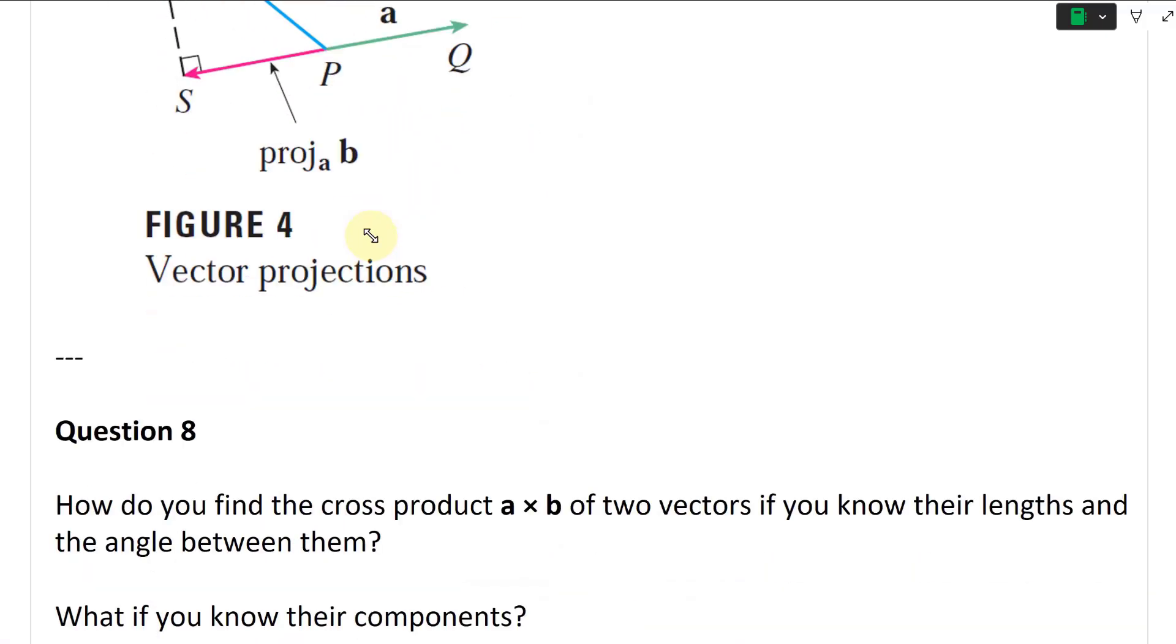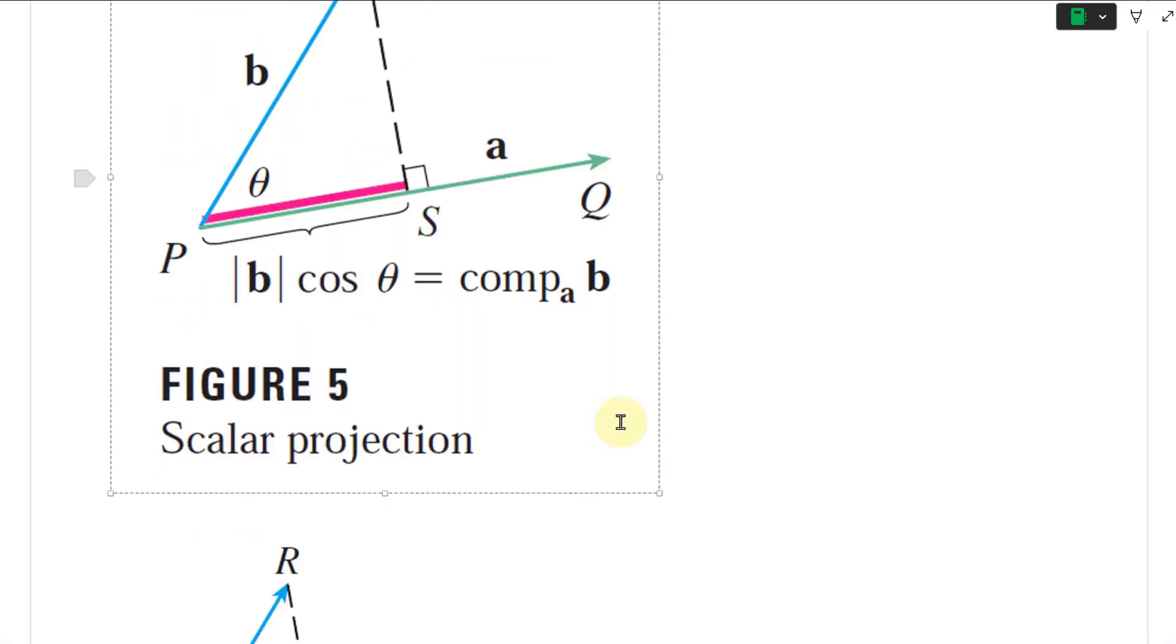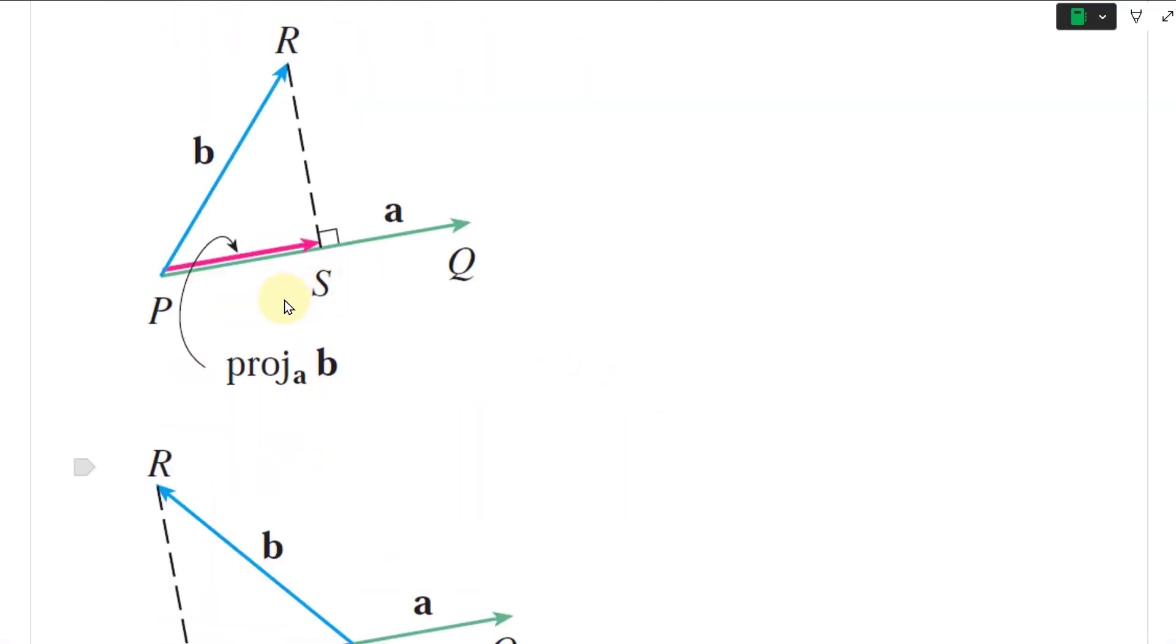There's the vector projection. It's just without the cosine—it's the direction, you don't need to know the magnitude. Well, it does have magnitude and direction, but this is the projection with the vector direction.